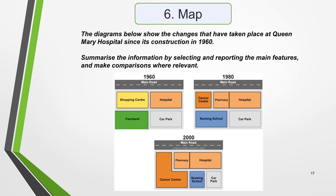You could also get a map question. It will most likely ask you to compare two or three maps of a place over a period of time, as in this question: The diagrams below show the changes that have taken place at Queen Mary Hospital since its construction in 1960.